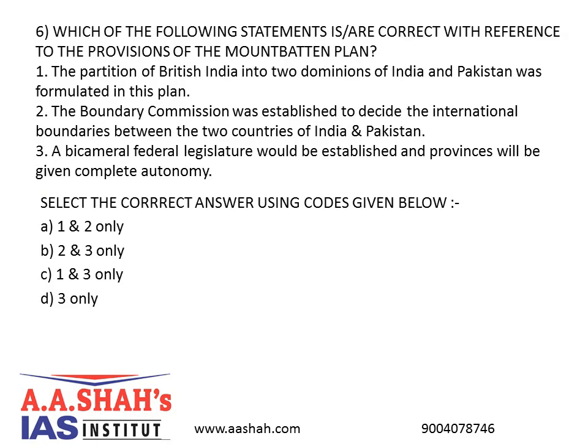6. Which of the following statements is/are correct with reference to the provisions of the Mountbatten Plan? 1. The partition of British India into two dominions of India and Pakistan was formulated in this plan. 2. The Boundary Commission was established to decide the international boundaries between the two countries of India and Pakistan. 3. A bicameral federal legislature would be established and provinces will be given complete autonomy. Select the correct answer using the codes given below. A: 1 & 2 only. B: 2 & 3 only. C: 1 & 3 only. D: 3 only.